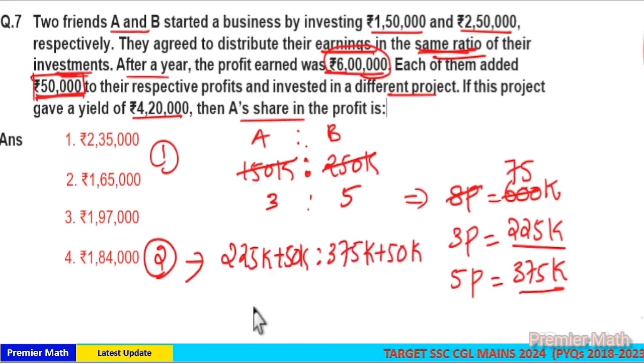This will become 225 plus 50 is equal to ₹275,000. And here 375 plus 50 is equal to ₹425,000. Now if you take the ratio...